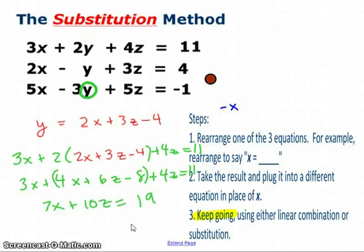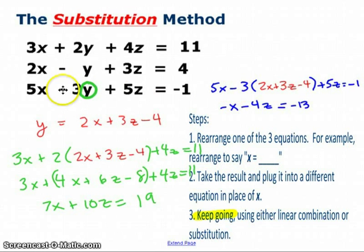Okay, I'm going to assume that you did that, and here it is. This 5x minus 3y becomes 5x minus 3 times that expression, plus 5z equals negative 1, just as it had been on the right side before. Simplifying this one down, I end up with negative x minus 4z equals negative 13. So now I have two x, z equations. I've got a 2x2 system, in other words.